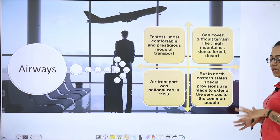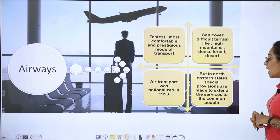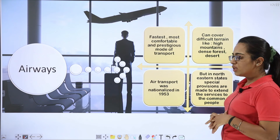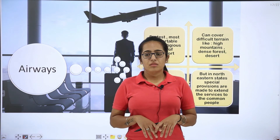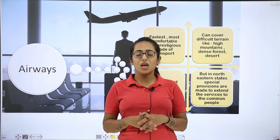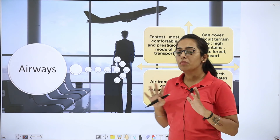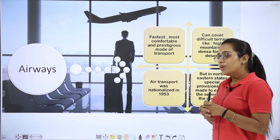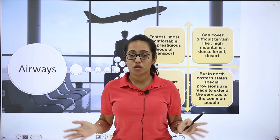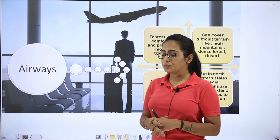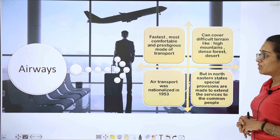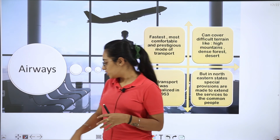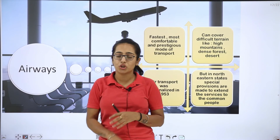Air transport was nationalized and the first flight was in 1953. But in northeastern states, special provisions are made to extend services to the common people, as affordability and accessibility is limited there. That needs to be properly set up. Airways require a proper scenario — an airport and landing infrastructure — and everything needed to manage it.